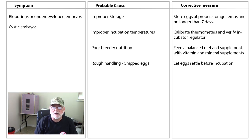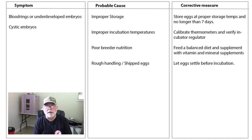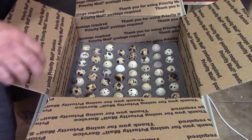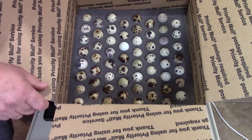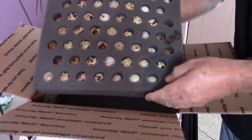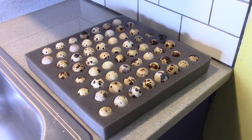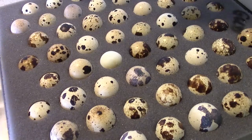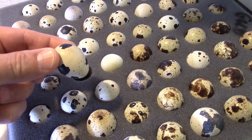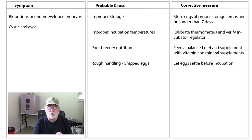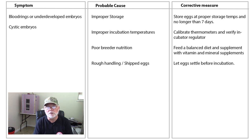Our next symptom sheet covers cystic embryos, underdeveloped embryos, and blood rings. These can be caused by improper storage, improper incubation temperatures, poor breeder nutrition, and shipped eggs. Shipped eggs are notorious for being mishandled at the post office — when you get them in, let them settle for about 24 hours prior to incubating, placing them pointy end down on a countertop. For poor breeder nutrition, make sure your breeders are fed a balanced diet, supplemented with a vitamin, mineral, and electrolyte supplement.